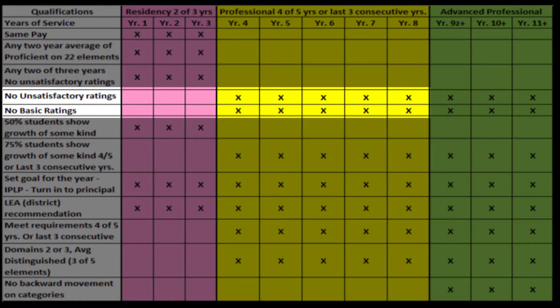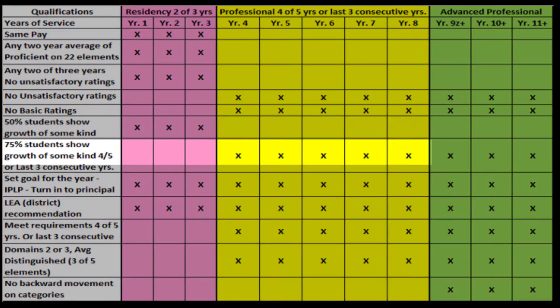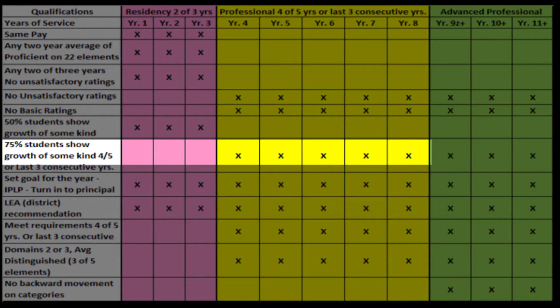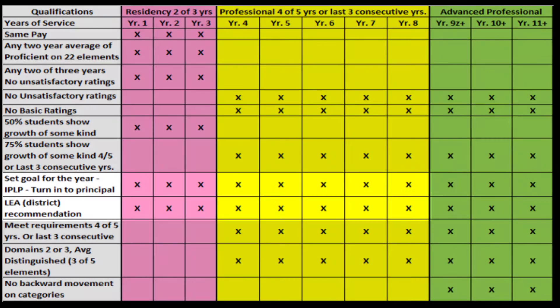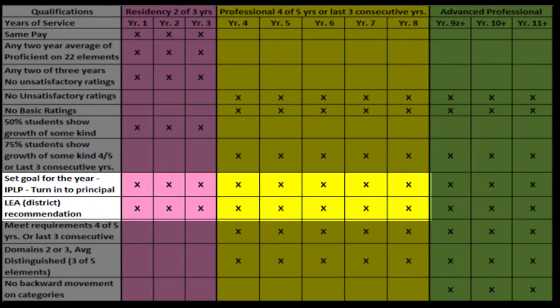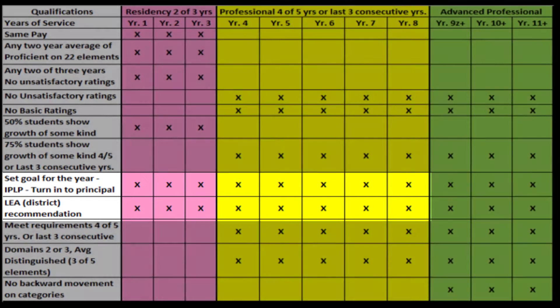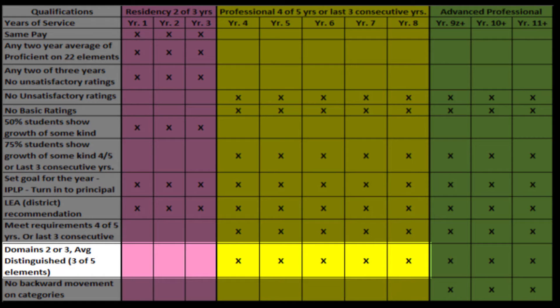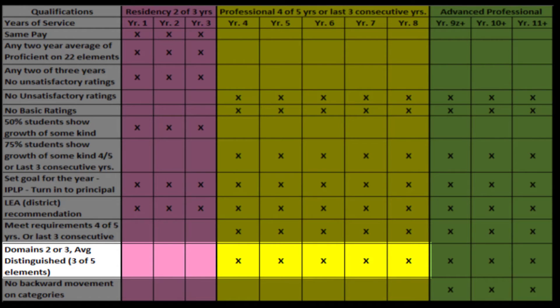The teacher must have no unsatisfactory ratings and no basic ratings on the Danielson Model. 75% of the students must show some kind of growth during the year. A goal must be set and discussed with the principal, and the teacher must be recommended by the district for completion of a successful year. The teacher must also average a distinguished rating in either Domain 2 or Domain 3, meaning they need to have three of five components rated as distinguished in either Domain 2 or Domain 3.